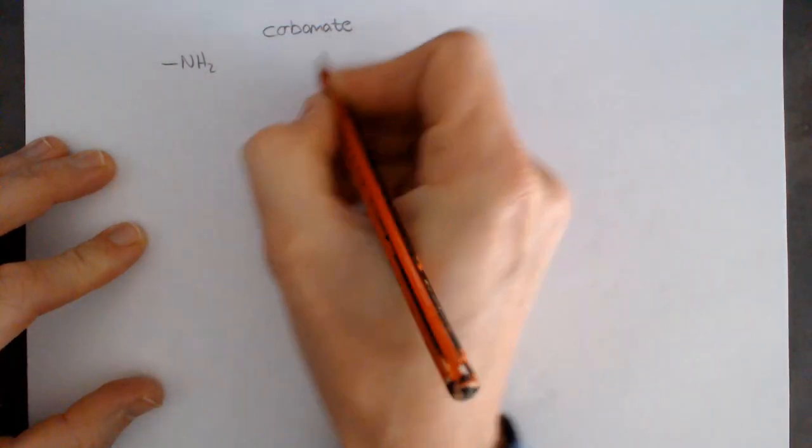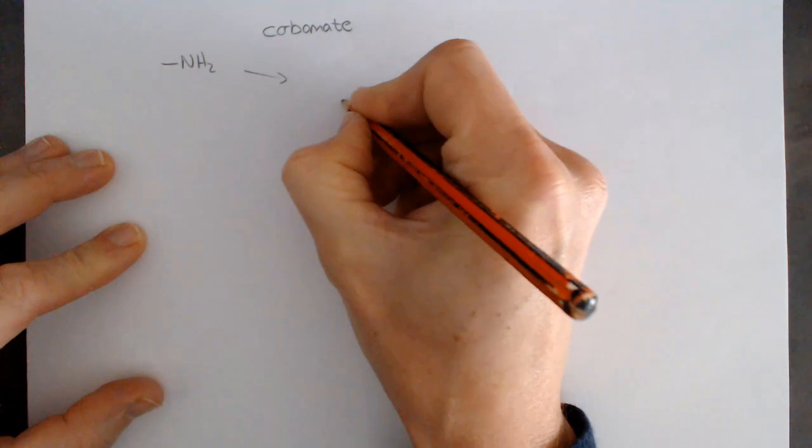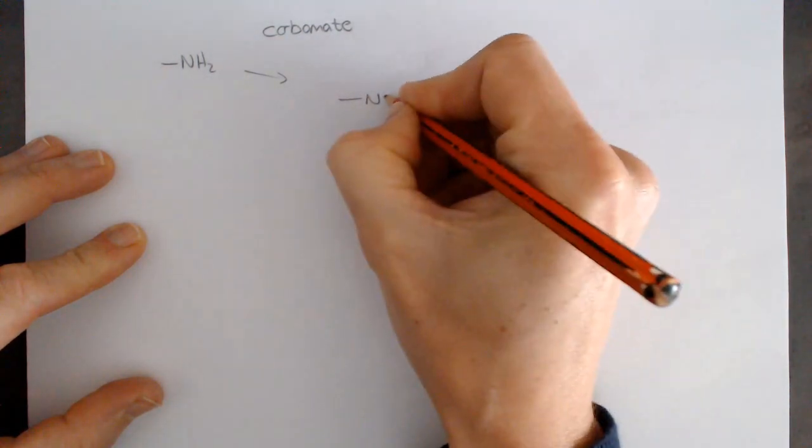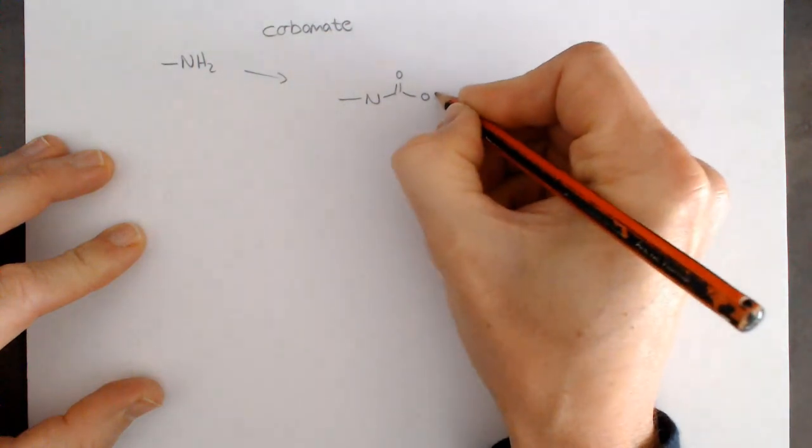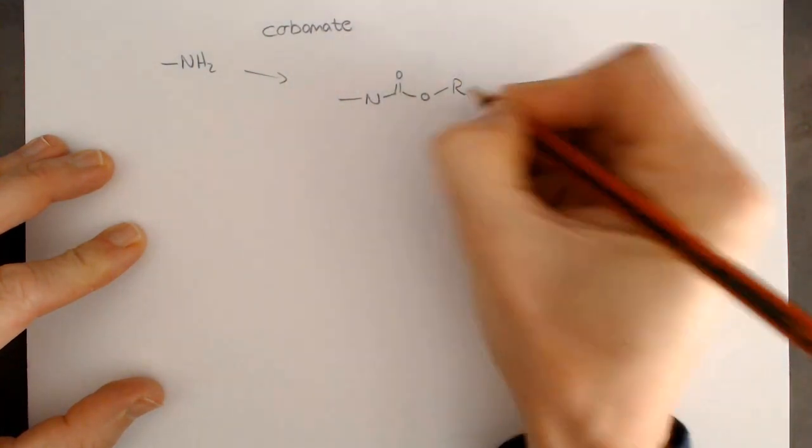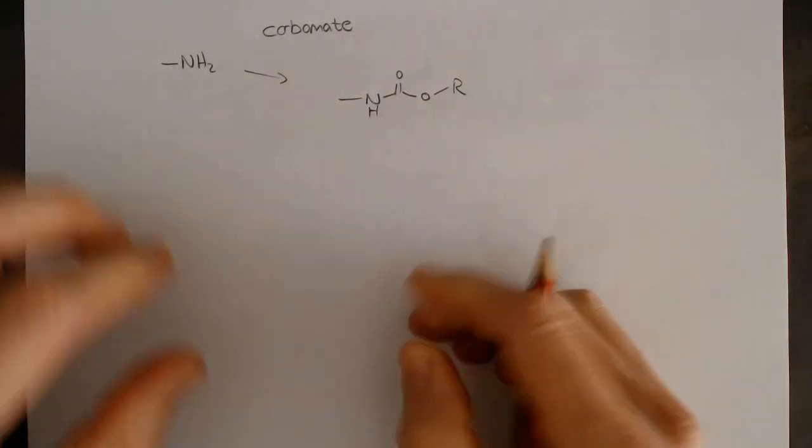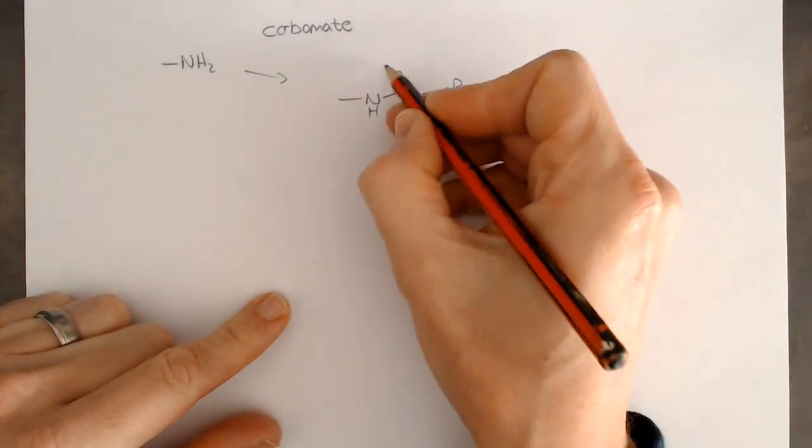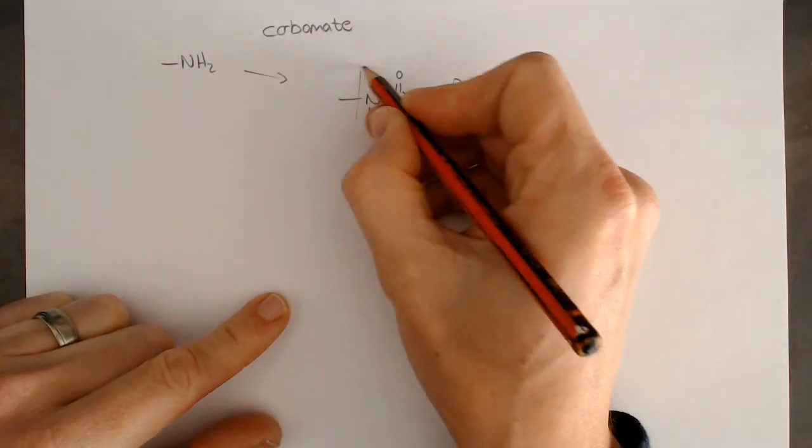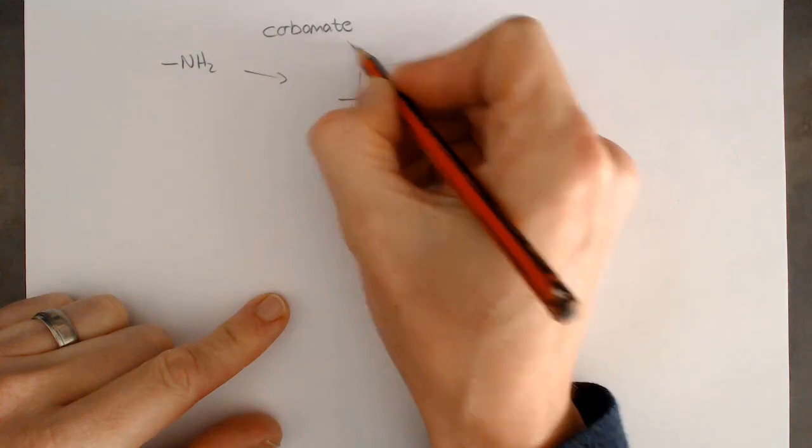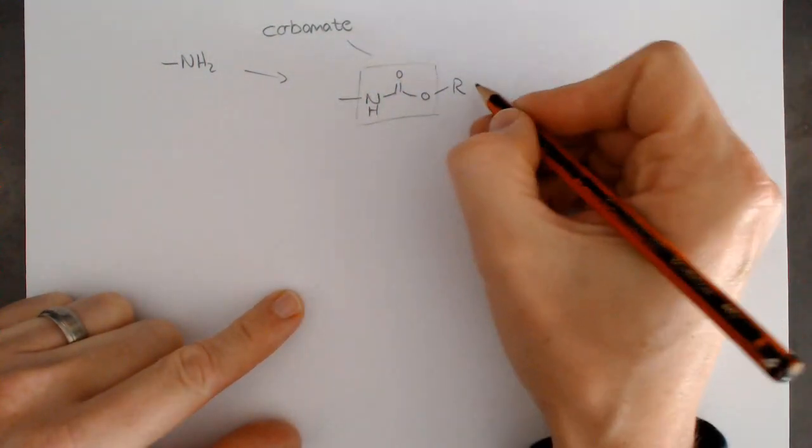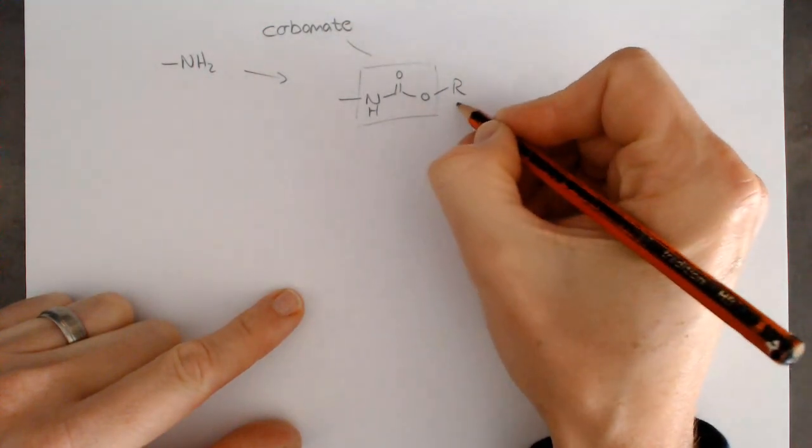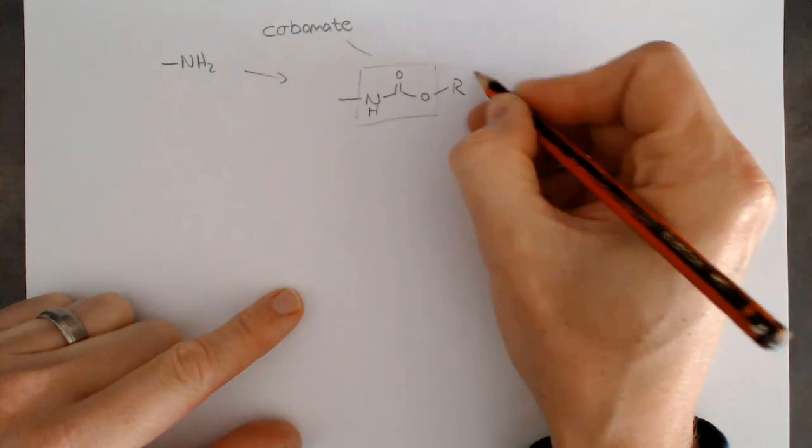That functional group is that we change this to the nitrogen with a double bond carbonyl, O, and then some R group, hydrogen on that. This is your carbamate. It's a really stable functional group, just like an amide. It's really stable. We're going to look at two different R groups.